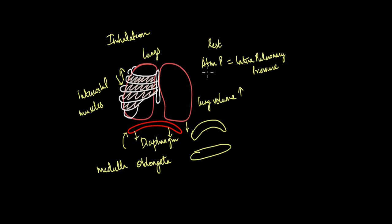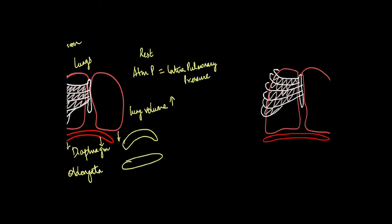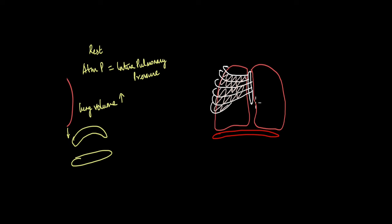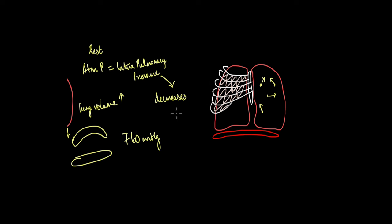What happens to the intrapulmonary pressure as the lung volume increases? The lungs have expanded — the lung volume has increased — so the air inside the lungs has more space to move around. The molecules have more space, which means they don't collide with each other as frequently as before, which means the intrapulmonary pressure decreases. The intrapulmonary pressure decreases during inhalation — it drops to a value less than the atmospheric pressure. Atmospheric pressure is still 760 mmHg, but the intrapulmonary pressure has now become, say, 756 mmHg. This creates a pressure gradient as the diaphragm and intercostal muscles contract and lung volume increases.